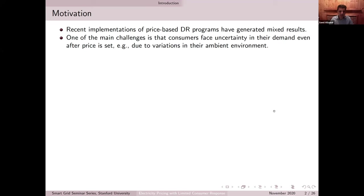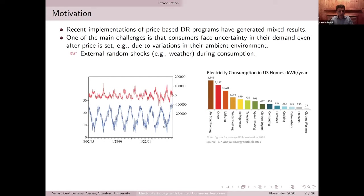The main challenge is that even after prices are set and consumers observe the price, they still face some uncertainty in terms of their demand and the amount of electricity they consume. Assuming demand response programs work perfectly implies that consumers should constantly monitor their consumption after observing the price and react accordingly — which is obviously not the case. The most obvious source of these fluctuations, which has a big impact on consumption at the residential level, is variation in the ambient environment — in particular, temperature changes.